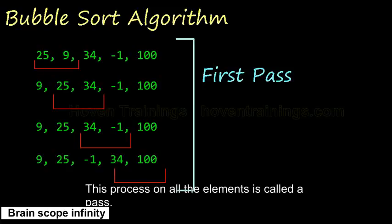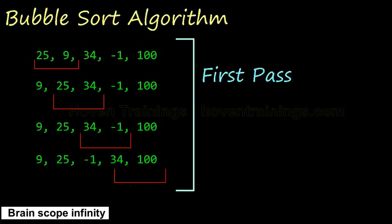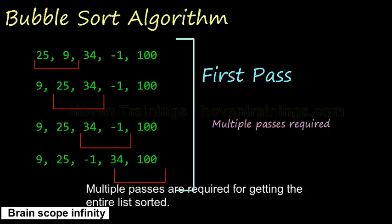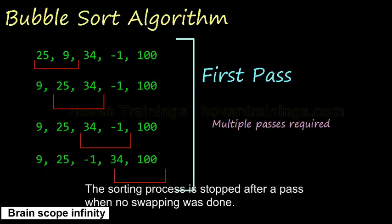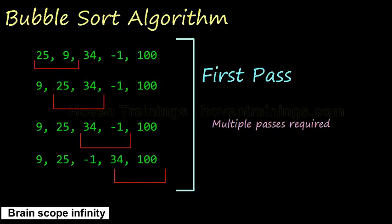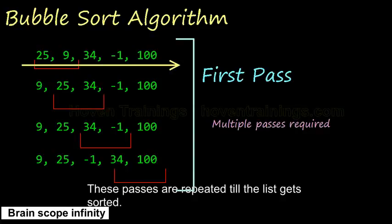This process on all the elements is called a pass. We have completed the first pass just now. Multiple passes are required for getting the entire list sorted. The sorting process is stopped after a pass when no swapping was done. These passes are repeated till the list gets sorted.